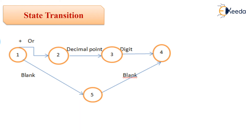From the second to the third state, there is a decimal point transition. From three to four, there is a digit — meaning it is followed by a digit, which can be a two-digit or three-digit number. Then from five to four, the arrow is going upward — from five to four the event is blank, because one to five is also blank. So five will move to four with the blank event, making four the initial end state.